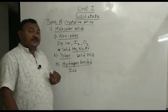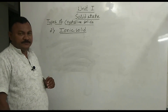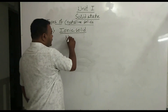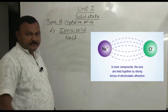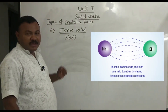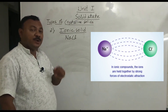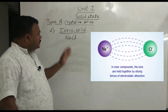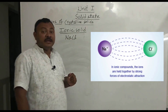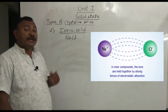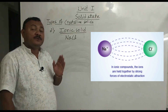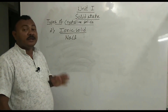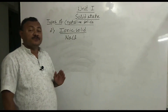The second type of crystalline solid is ionic solids. The best example is sodium chloride. Sodium is a metal and chlorine is a non-metal; Na⁺ and Cl⁻ ions are held by ionic bonds, also called electrostatic forces of attraction. So ionic solids are crystalline solids containing metal cations and non-metal anions held by ionic bonds or electrostatic forces of attraction.